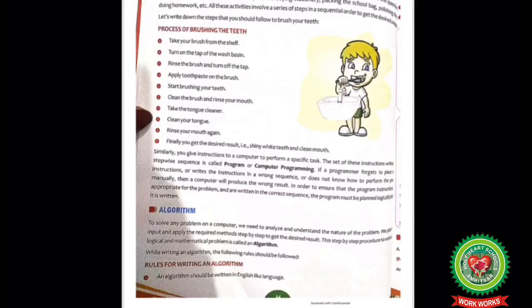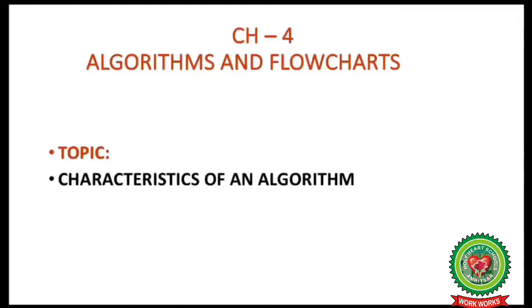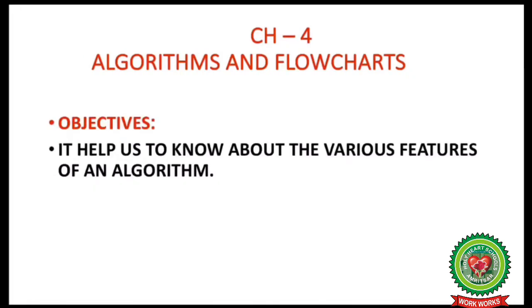In the previous class, we discussed algorithms, a few examples of algorithms, and rules for writing an algorithm. The topic we will discuss today is characteristics of an algorithm. Before we start, we will discuss objectives. The main objective is to help us know about the various features of an algorithm.